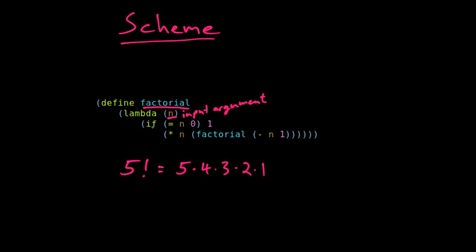And now first we check if n equals zero, and if so, we return one. So here is the base case.